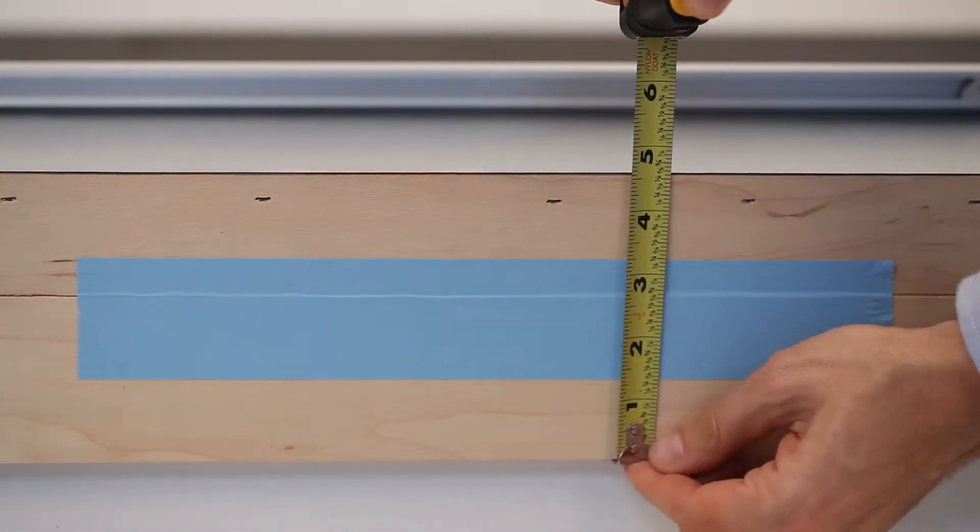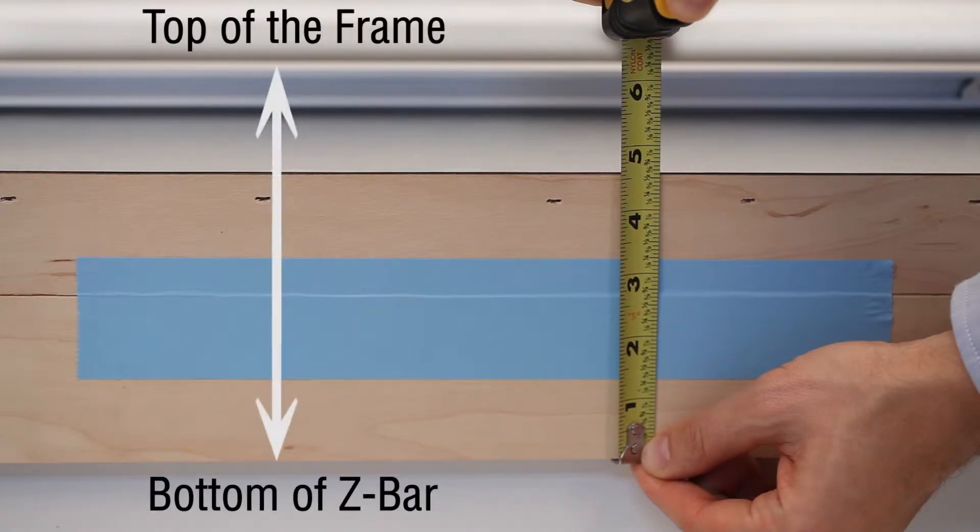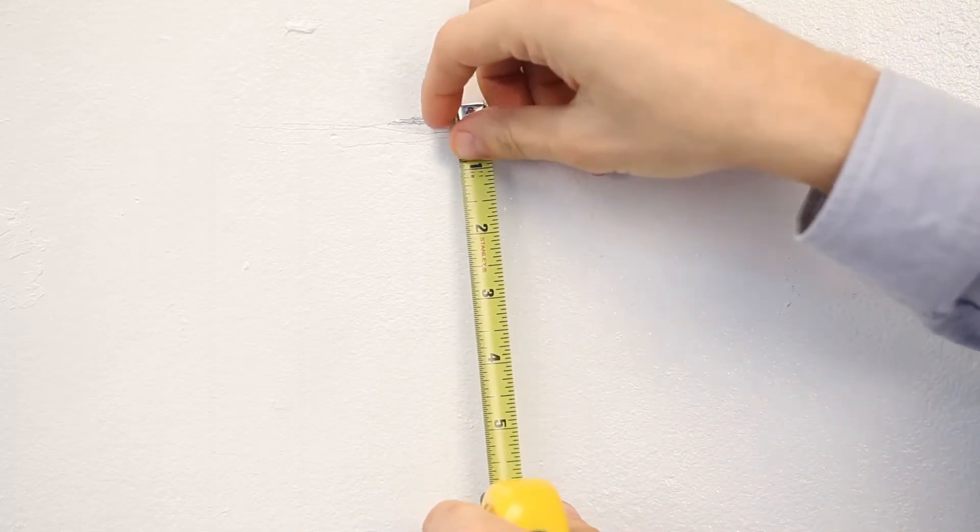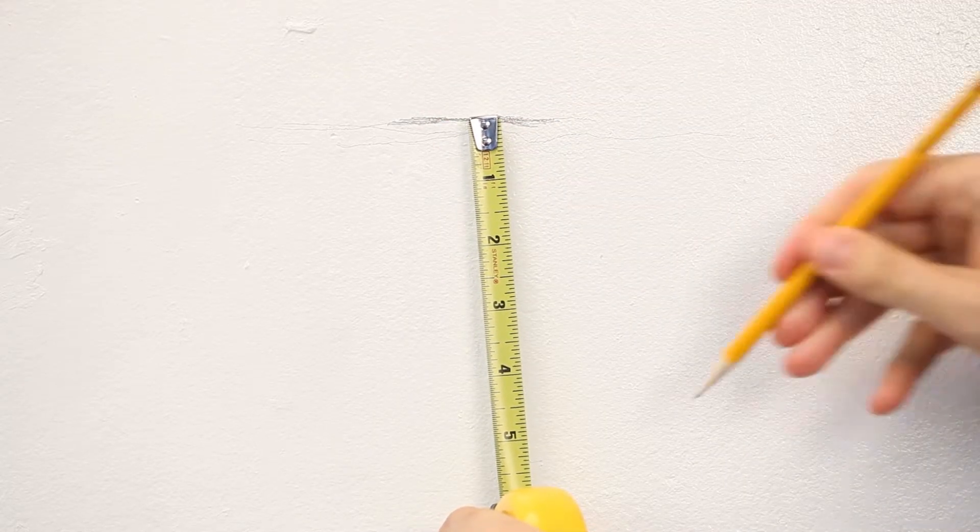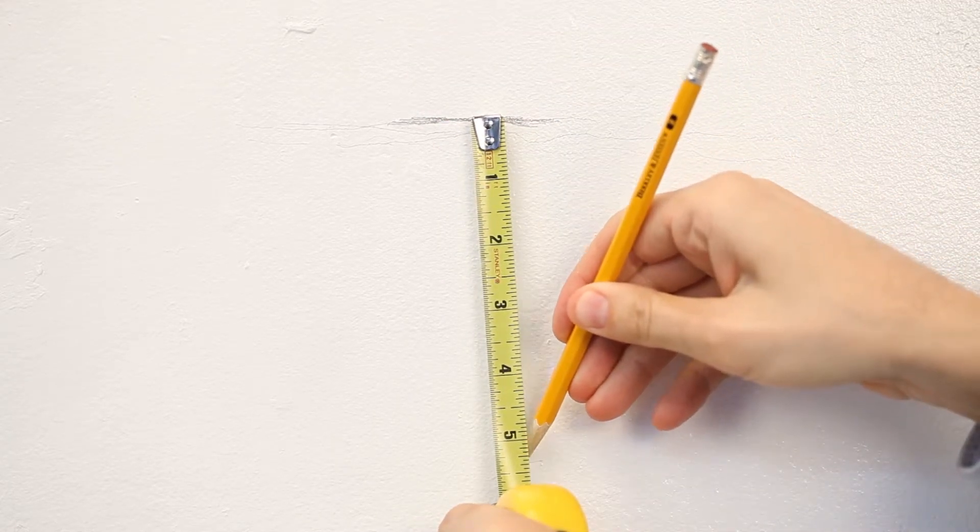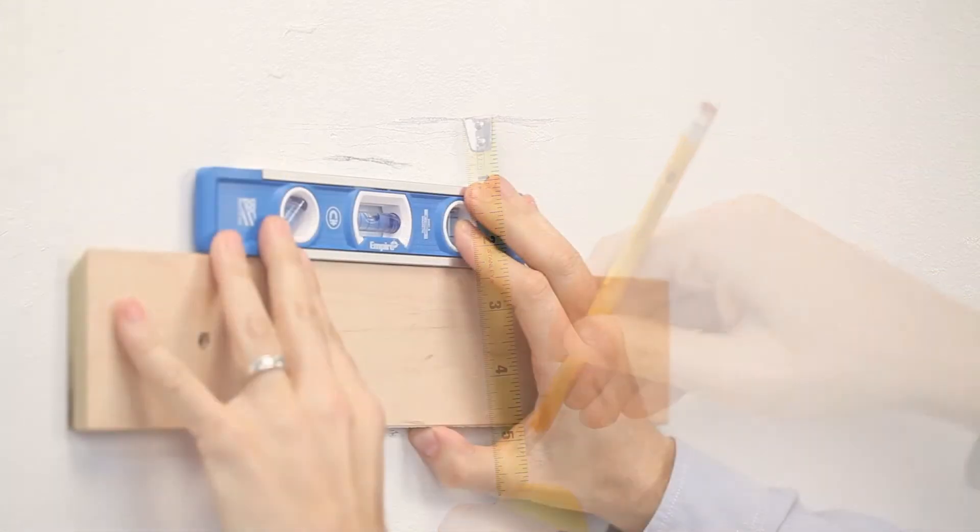On the back of the swing frame, measure the distance from the top of the frame to the bottom of the wood z-bar. Go back to the wall, start measuring down from the pencil mark as a starting point, and transfer the wood z-bar measured distance and mark with pencil.